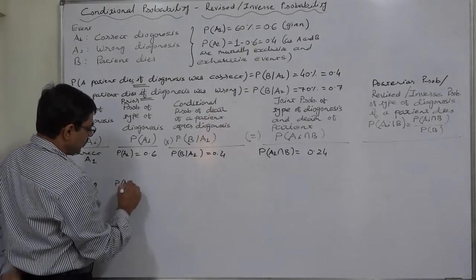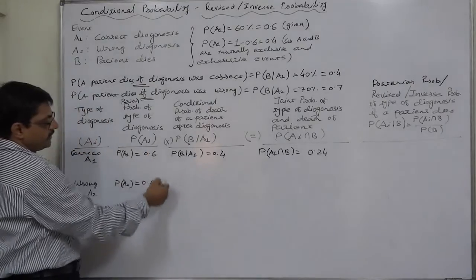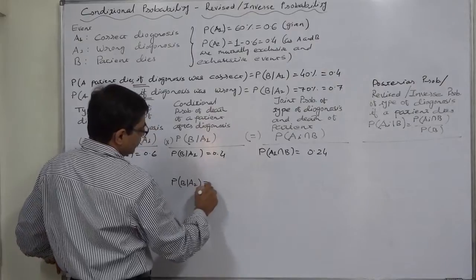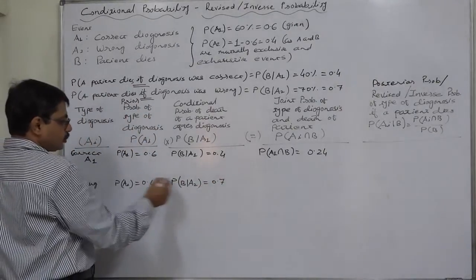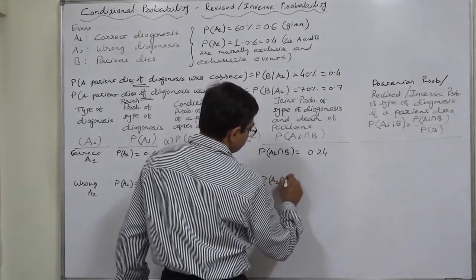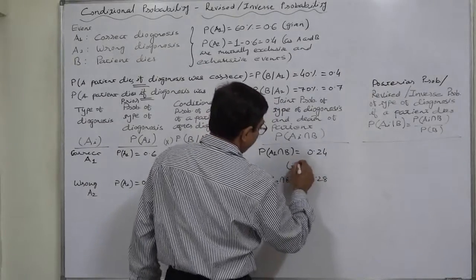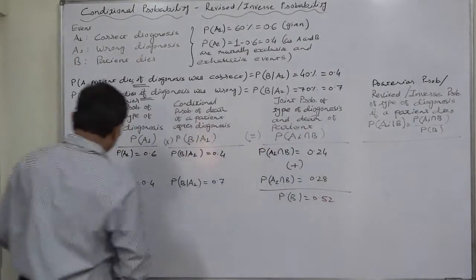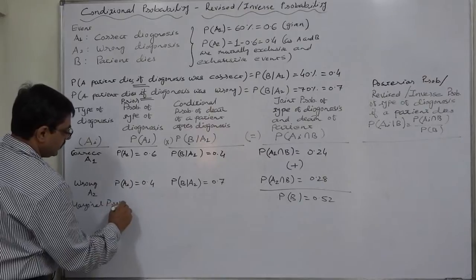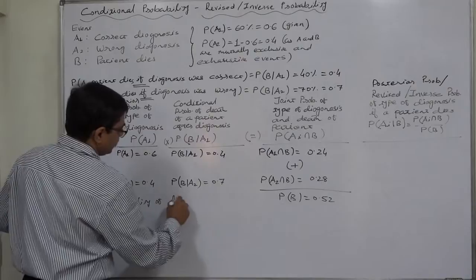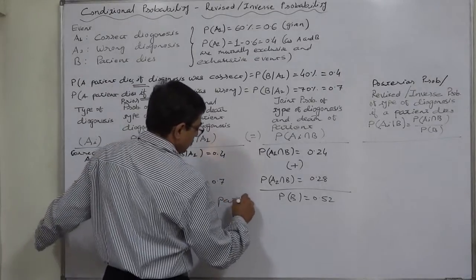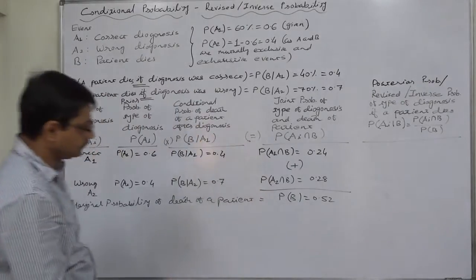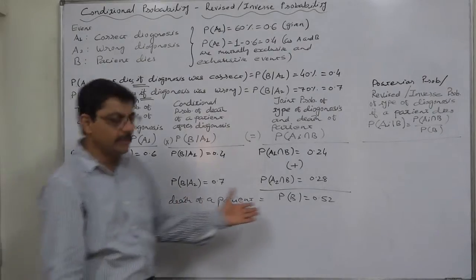For wrong diagnosis A2: P(A2) = 0.4. The summation of all prior probabilities is always one because they are mutually exclusive and exhaustive. P(B given A2) = 0.7. Multiplying gives the joint probability P(A2 ∩ B) = 0.4 × 0.7 = 0.28. Adding these joint probabilities gives the marginal probability of B — the general probability of death of a patient, whether diagnosis was correct or wrong: P(B) = 0.24 + 0.28 = 0.52.